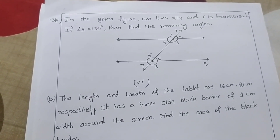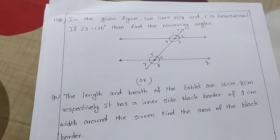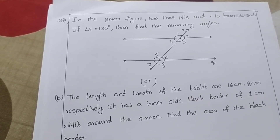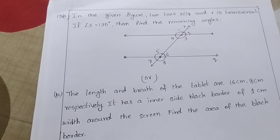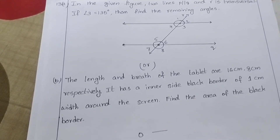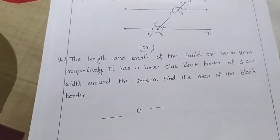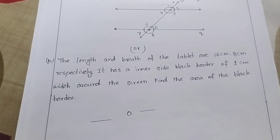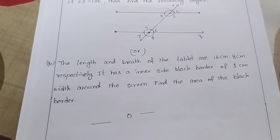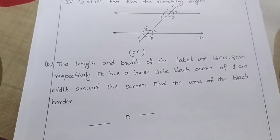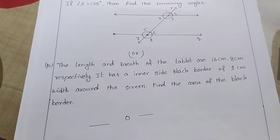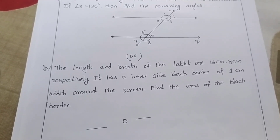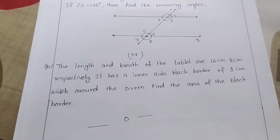In the given figure, two lines P parallel Q and R is a transversal. If angle 3 is equal to 135 degrees, find the remaining angles. The length and breadth of the tablet are 16 cm and 18 cm respectively. It has an inner side black border of 1 cm width around the screen. Find the area of the black border.